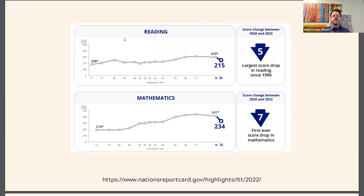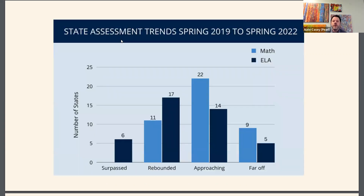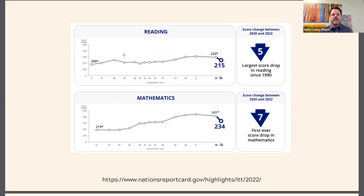Across the nation, we saw pretty devastating results from both fourth graders and eighth graders in both math and reading. There was a three-point decline in average reading scores for fourth and eighth grade compared to 2019, which was the last time the test was administered. Math scores were even worse, with fourth graders decreasing by four points and eighth graders decreasing by eight points. The eighth grade math slide is particularly scary as it is a critical translation point to higher math like algebra, geometry, and trigonometry.